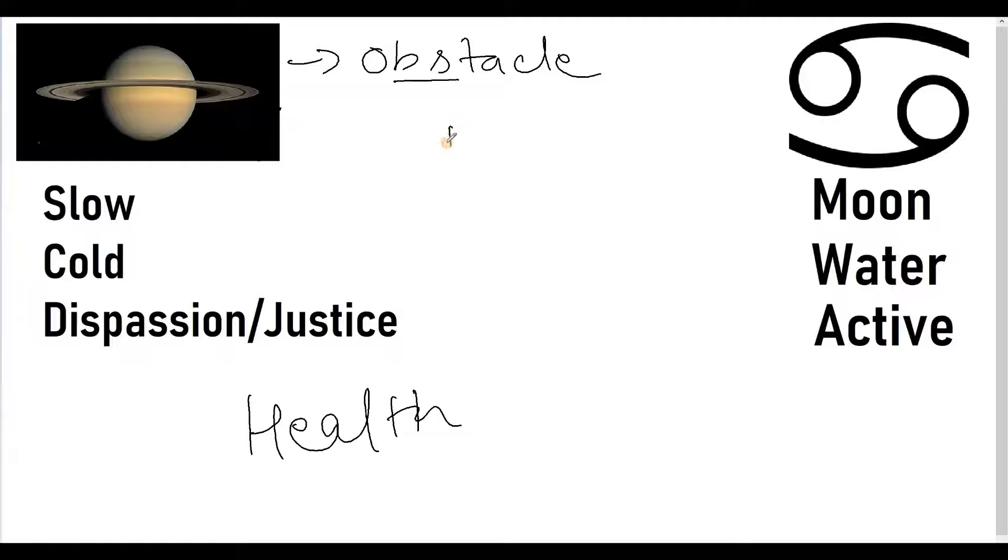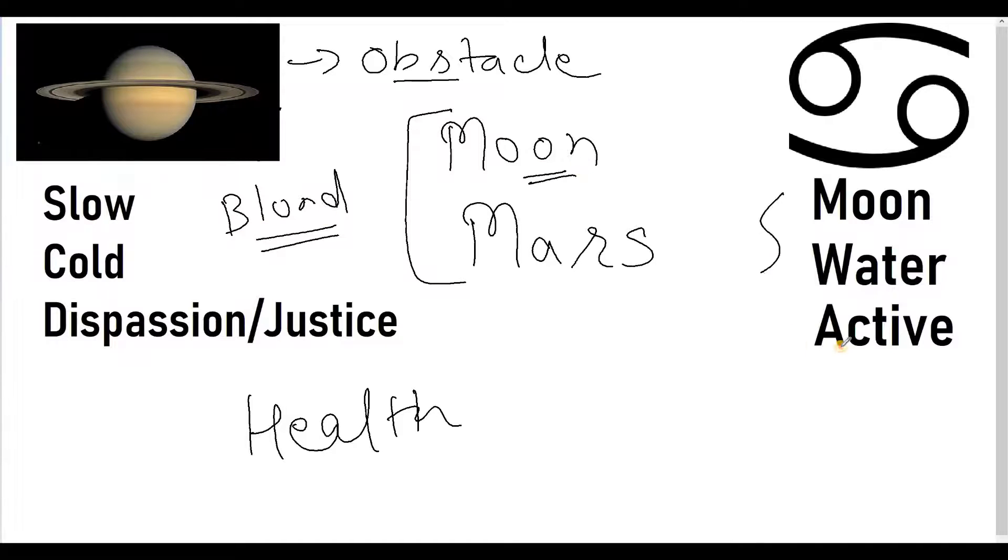So basically, this planet of obstacle in the area of free flow of water exchange can cause trouble related to any kind of fluid exchanges within the body. And it is one placement which is very closely associated with blood flow troubles. Now obviously, this trouble is going to be much more when Moon as well as Mars is afflicted.